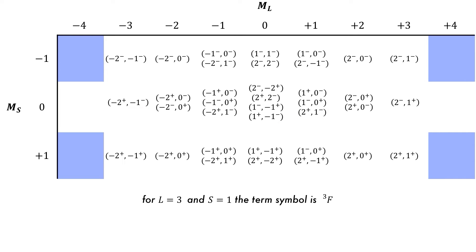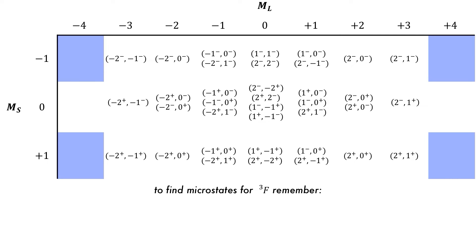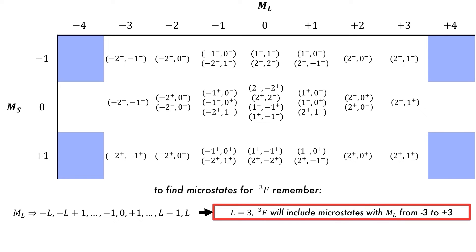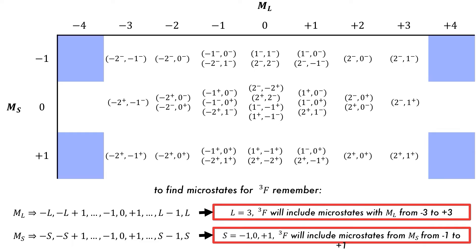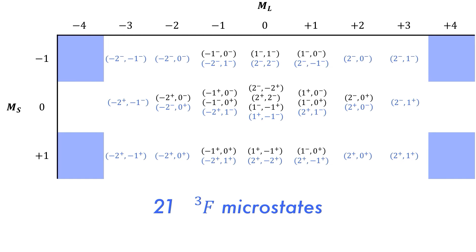Now there is a more regular shape to the microstates after removing the 9 from singlet G, and our maximum ML value is now +3. We need to determine which microstates represent the triplet F atomic state. If L equals 3, then ML will range from -3 to +3: -3, -2, -1, 0, +1, +2, and +3, giving 7 different ML values. For MS values, the values run from +S to -S, which in this case is -1, 0, and +1. As a result, we will have one microstate from every populated box, giving 21 microstates described by the triplet F atomic term symbol.